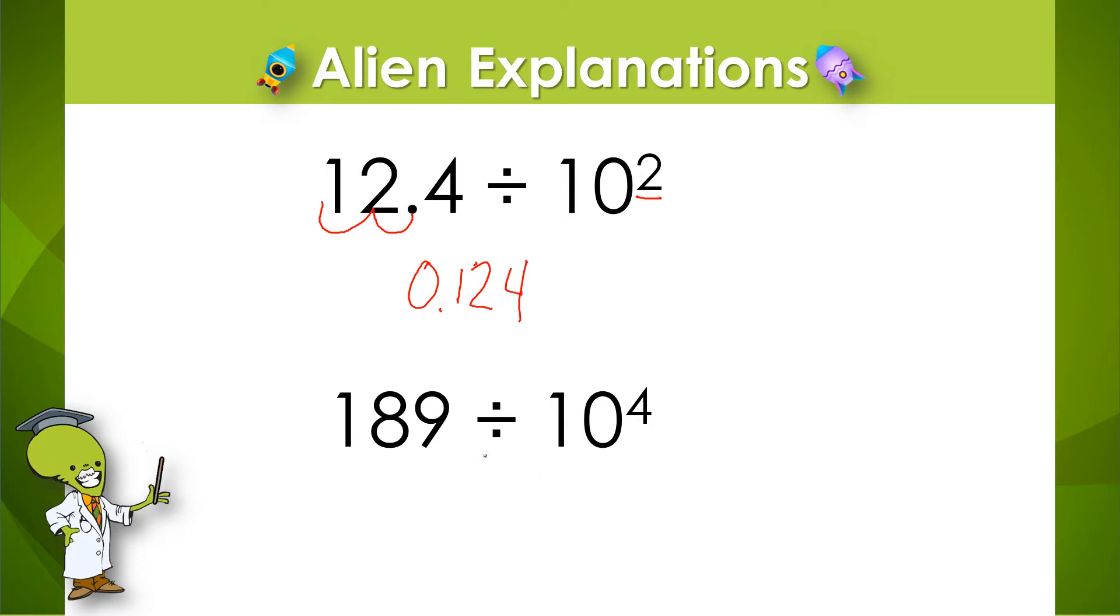In the next example, 189 divided by 10 to the fourth power, each digit will move down four place value spots. So where is our decimal point? Our decimal point is always located right after the digit that is in the ones place. So it's here. Sometimes you may have to draw it.